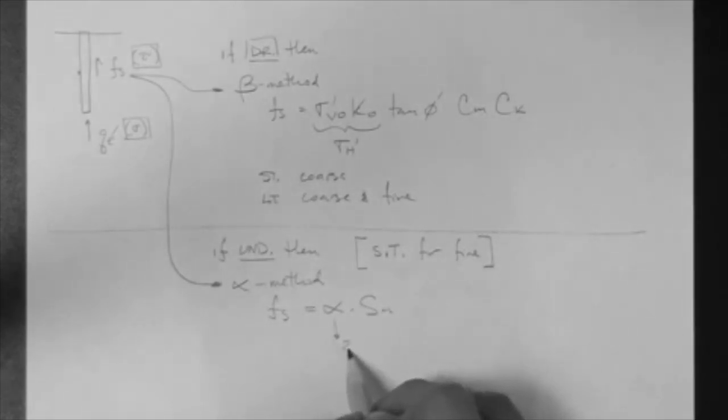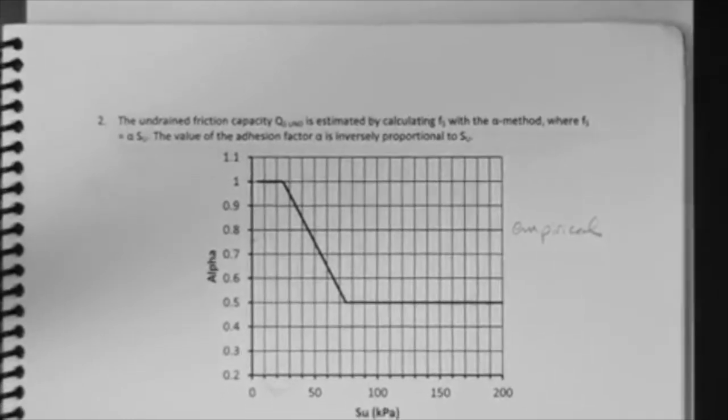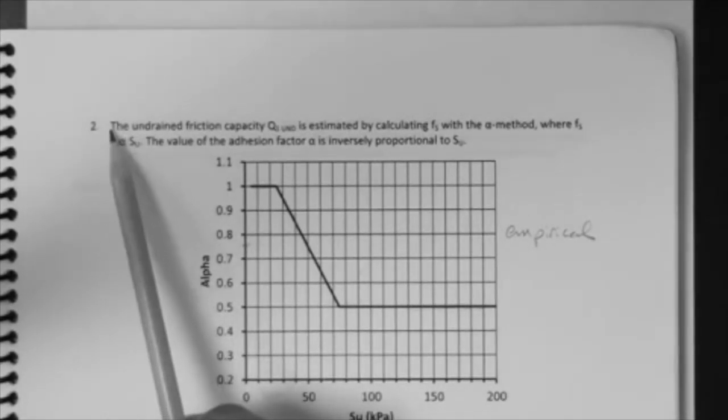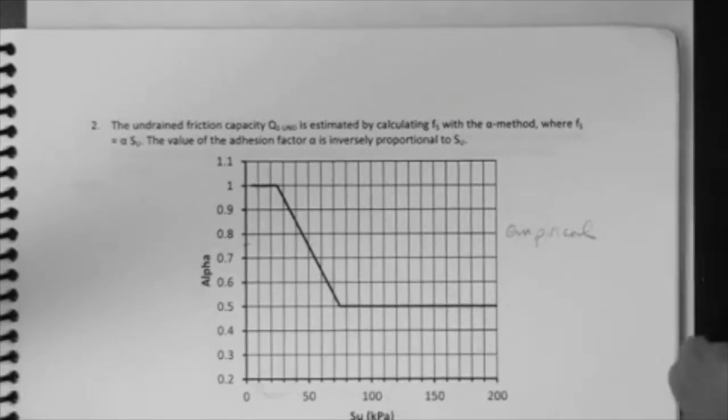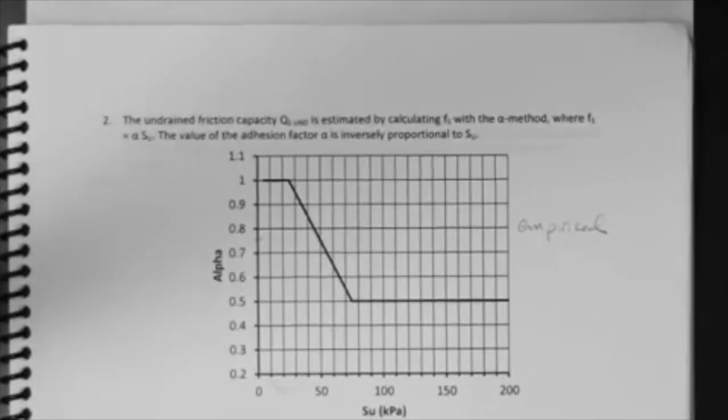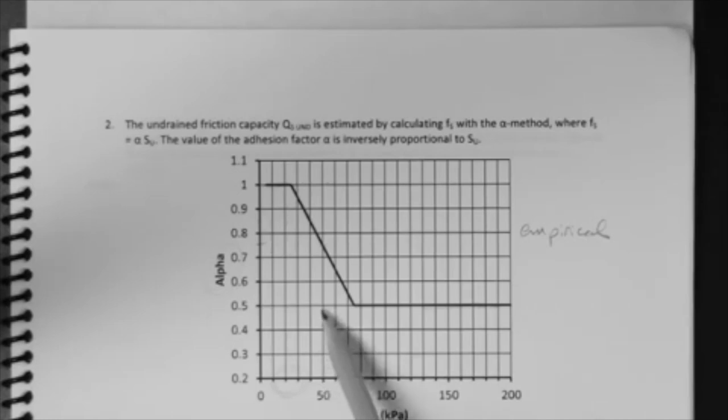What alpha? Well, alpha is what we have to determine using the reader. If you go to the reader, this is inside the deep foundations section. It starts with number 2, and it says the undrained friction capacity is estimated by calculating Fs with the alpha method. This little chart here tells us what alpha should be depending on the SU of the soil. For example, let's say that our soil is a clay with SU equal to 50 kPa. In that case, we go to the SU here, 50 kPa, alpha is 0.75.